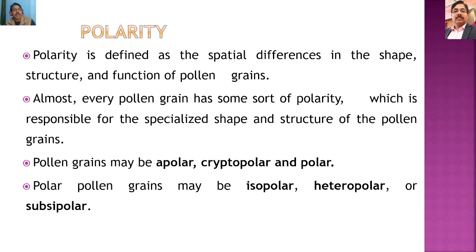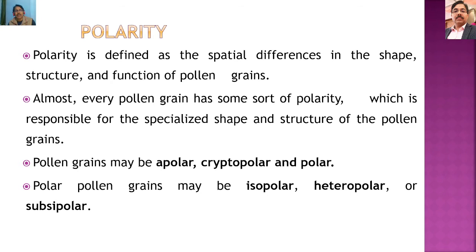The next important character of pollen grains is polarity. Pollen grains may or may not have polarity. Polarity is defined as spatial differences in the shape, structure, and function of the pollen grain. Pollen grains are mostly circular or elliptical and have two poles — a proximal pole and a distal pole — and the spatial difference between them in shape, structure, function, and ornamentation is called polarity.